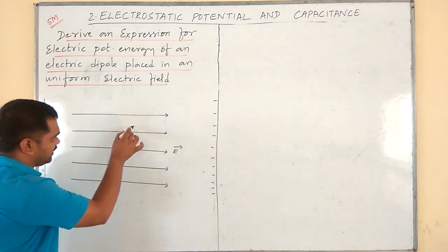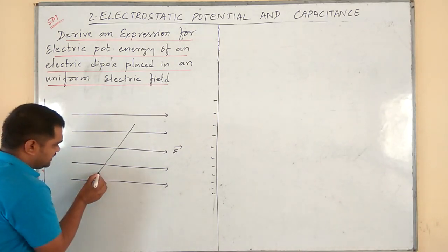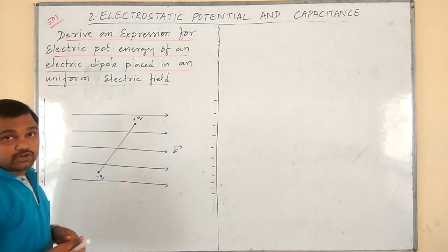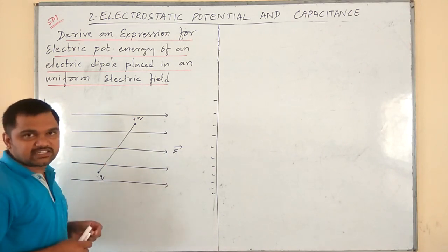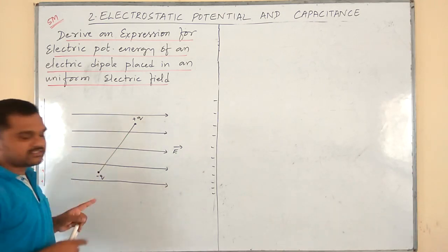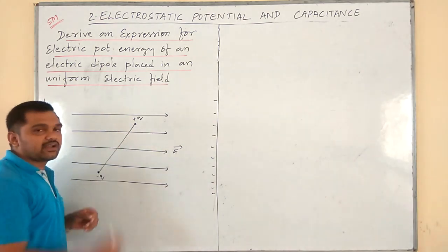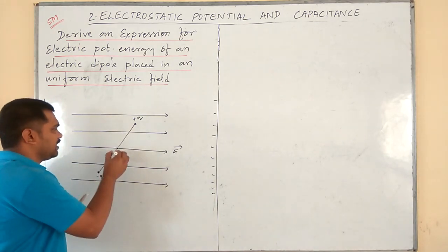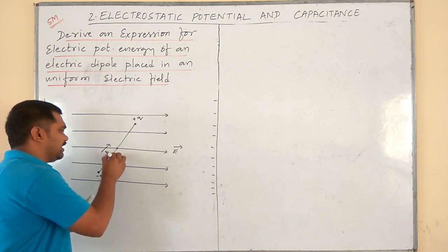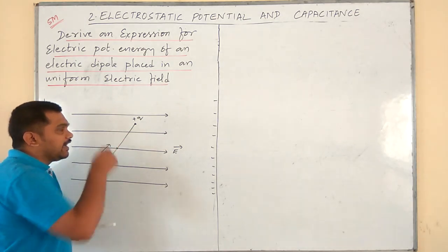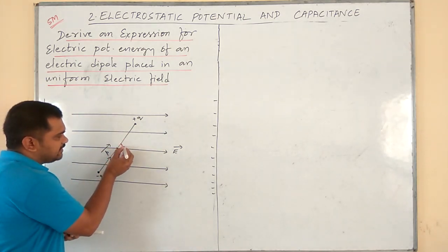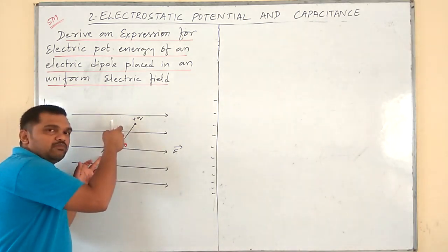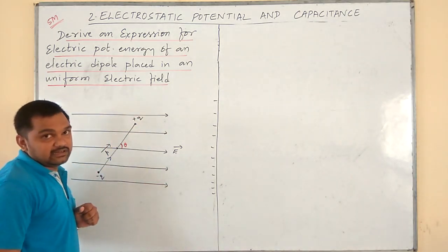Now let us consider an electric dipole in the presence of this uniform electric field — let it be minus q and plus q. An electric dipole consists of two equal and opposite charges separated by a small distance. The direction of the electric dipole moment is always from the negative charge to the positive charge. Let theta be the angle made by the electric dipole moment with the direction of the electric field.